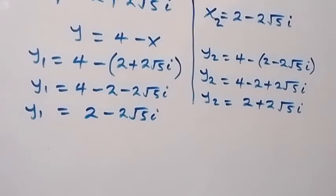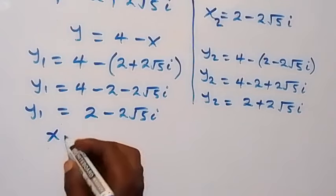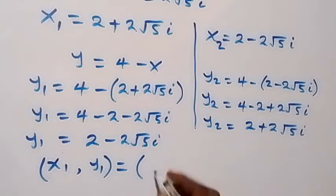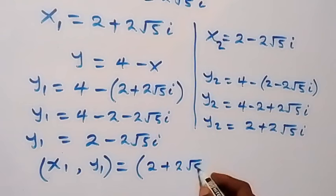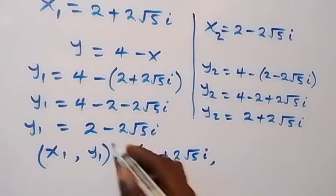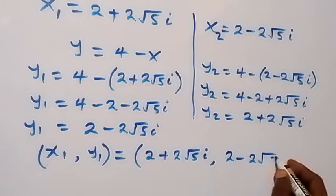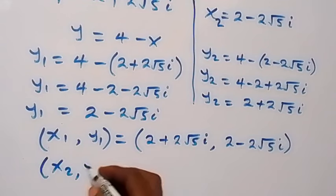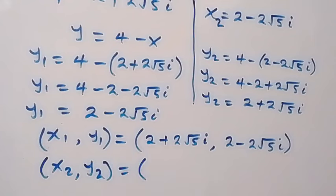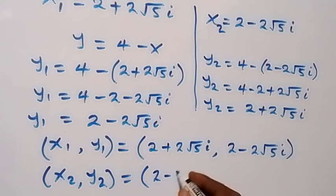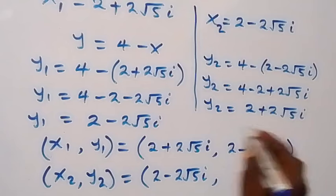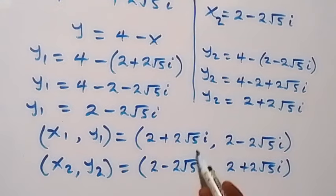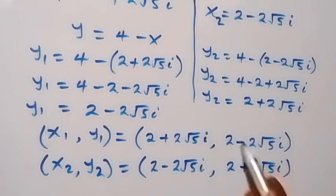We have 2 sets of solutions. The first set is (x1, y1) which gives us (2 plus 2 root 5 i, 2 minus 2 root 5 i). The second set is (x2, y2) which gives us (2 minus 2 root 5 i, 2 plus 2 root 5 i). Note that x1 is the same as y2, and y1 is the same as x2.